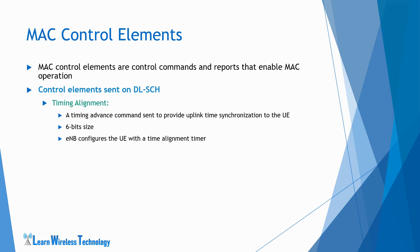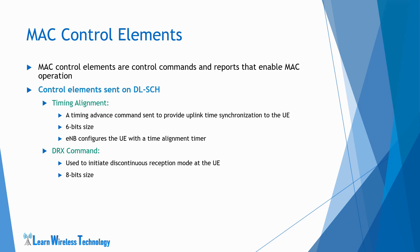The E-NodeB configures the UE with a timing alignment timer and the UE might lose synchronization if the timer expires. The second control element is the DRX command, used to initiate discontinuous reception mode at the UE. The size of a DRX command is 8 bits. DRX is a mode where the UE remains in sleep state for a configured period of time with no interaction with the network over the air interface. The UE monitors the PDCCH during the on-duration time when it is awake and turns off its receiver during periods of inactivity.